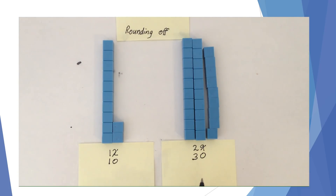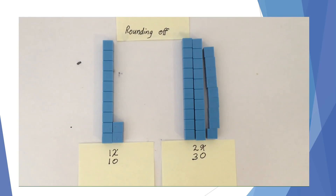Therefore we need to raise the tens digit up one from 2 to 3, and then make the ones digit a 0 to mark place. Remember: if the digit after is 4 or below, leave the digit as it is and put zeros to mark place. If the digit after is 5 or above, raise the digit up one and then put in zeros. If you find yourself getting confused, try to visualize your number with base-10 blocks — you're trying to take it to the value it's closest to.